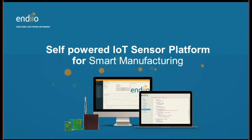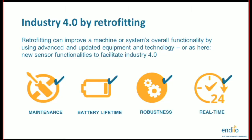I'll very briefly show what it's all about. Retrofitting is the concept of improving a machine or system with new functionality — in this case, new sensor functionality to facilitate Industry 4.0. Please imagine a paper factory with a hundred-meter-long plant. It's a very big factory, and of course you do not buy a new factory just to add functionality. The paper industry also faces increasing challenges with quality and wants to reduce downtime.